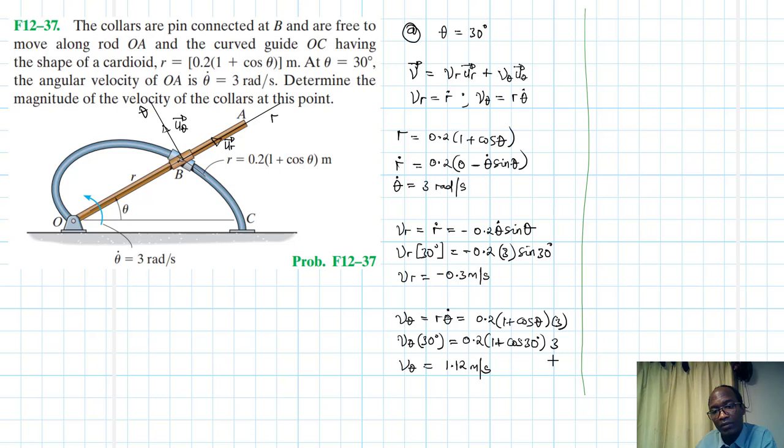Once we have this information, we're looking at the magnitude. These are perpendicular to each other, so we can use vector rules. Velocity magnitude = √(V_r² + V_θ²). V_r = -0.3 m/s, V_θ = 1.12 m/s.